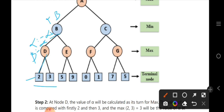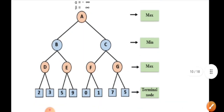We compare: minus infinity vs 2. The result is 2, so alpha becomes 2. Then on the right side, we compare 2 with 3. The result equals 3. So at D node, alpha value is 3 and beta value is infinity.